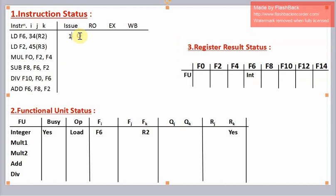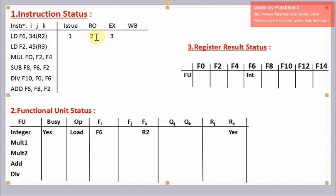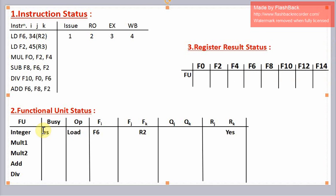In the second cycle, this instruction can read its operands because they are available. But in the second cycle, we cannot issue the second load instruction because the integer unit is already busy. So to avoid a structural hazard, we cannot issue this second load instruction. The latency of the integer unit is one cycle, so this load instruction completes execution after the third clock cycle, and after the fourth clock cycle it completes write back. So after the fourth clock cycle, the integer unit writes the result in f6 and becomes free.